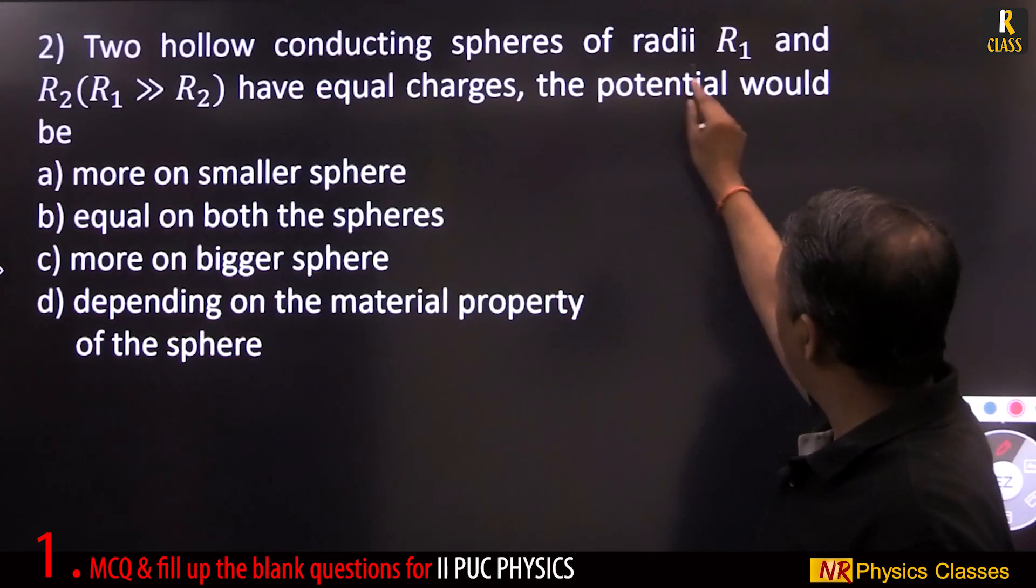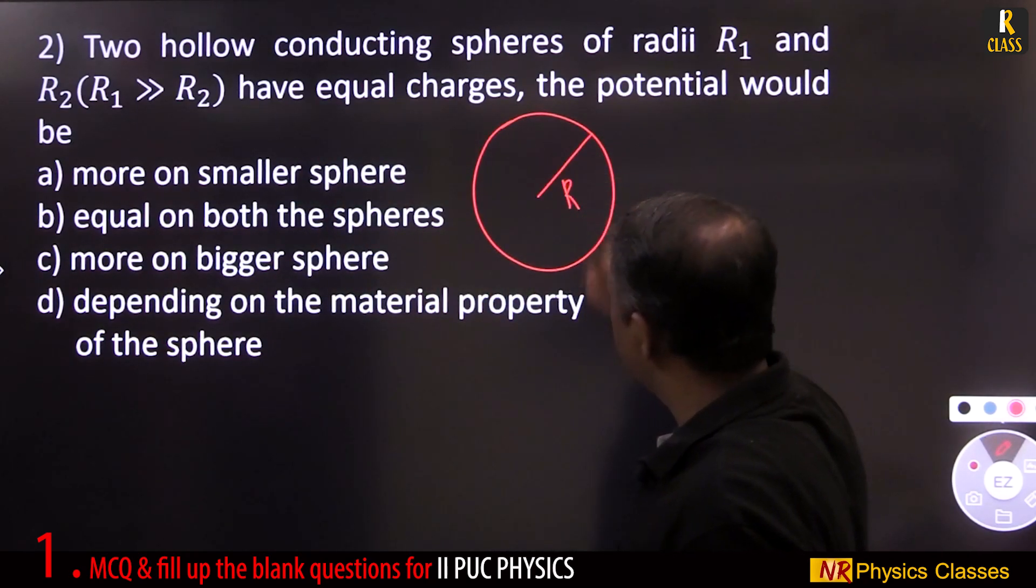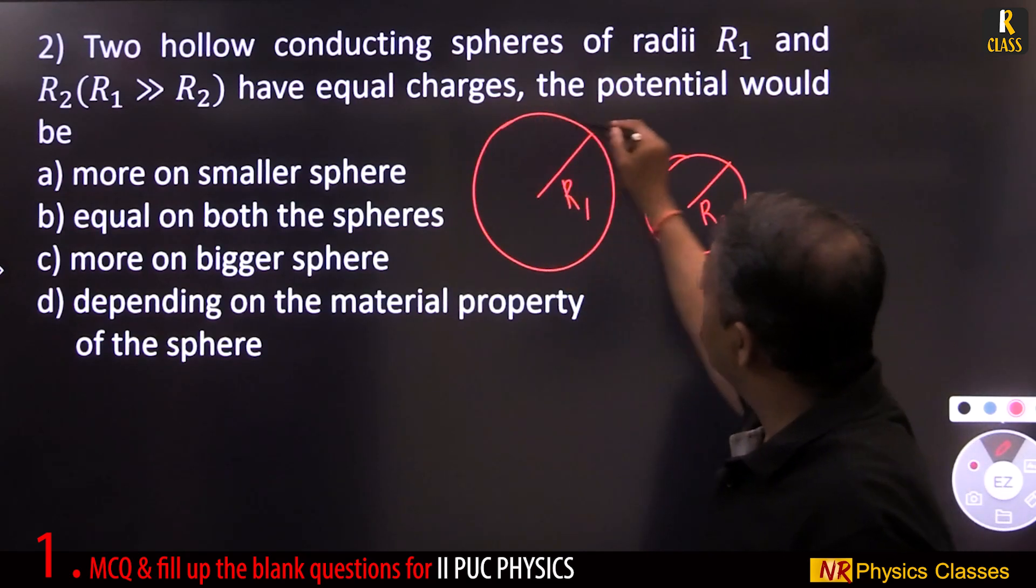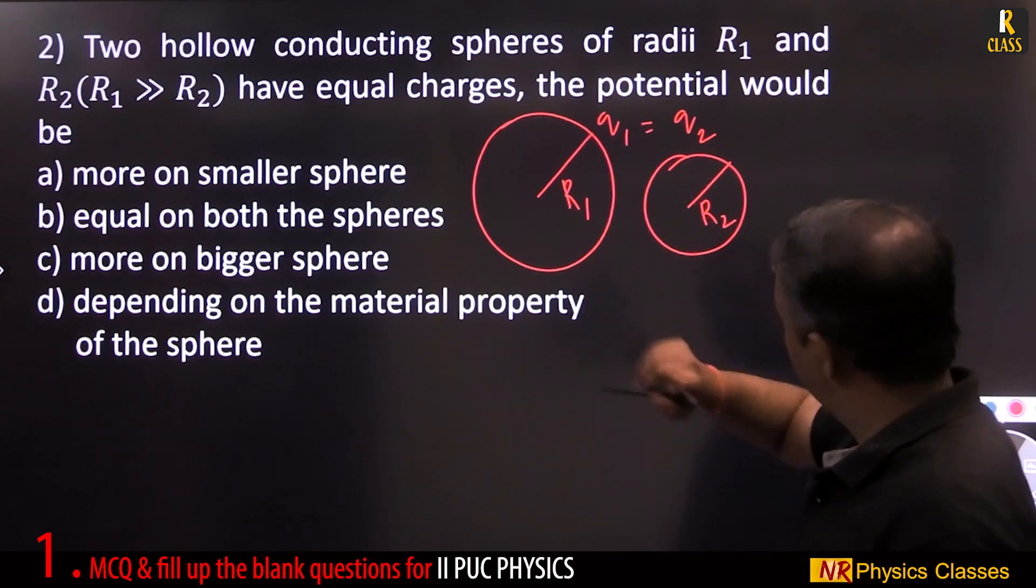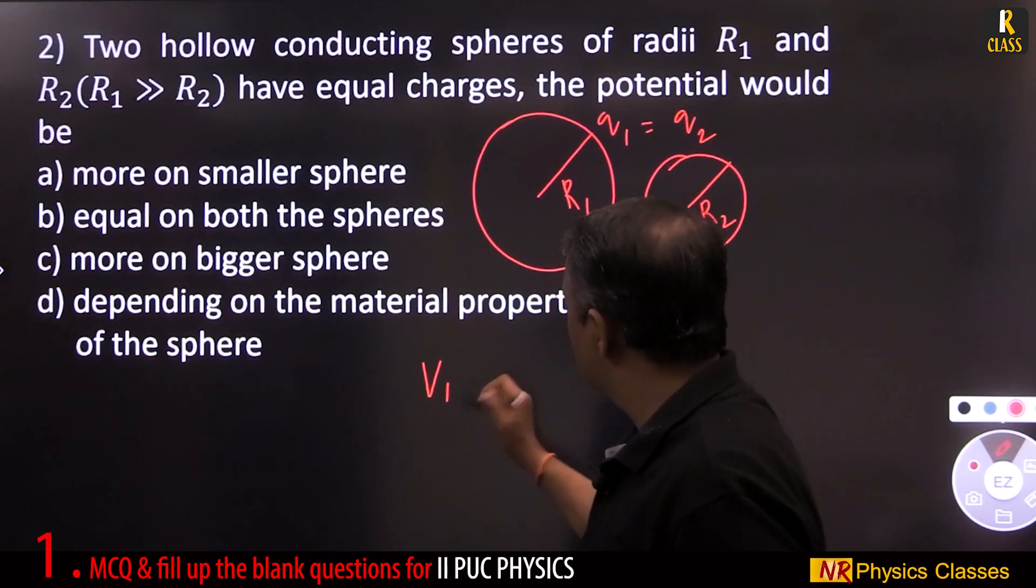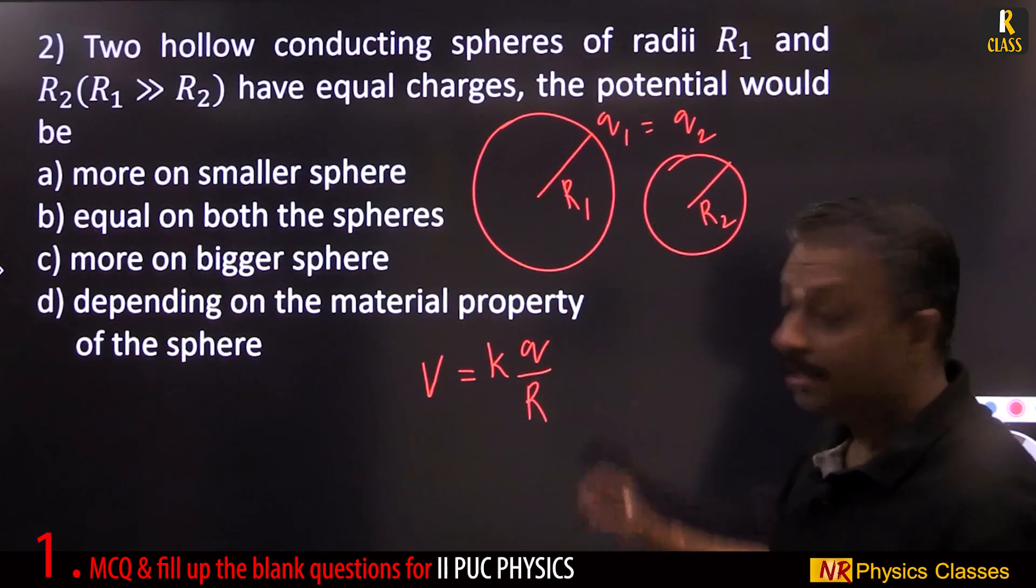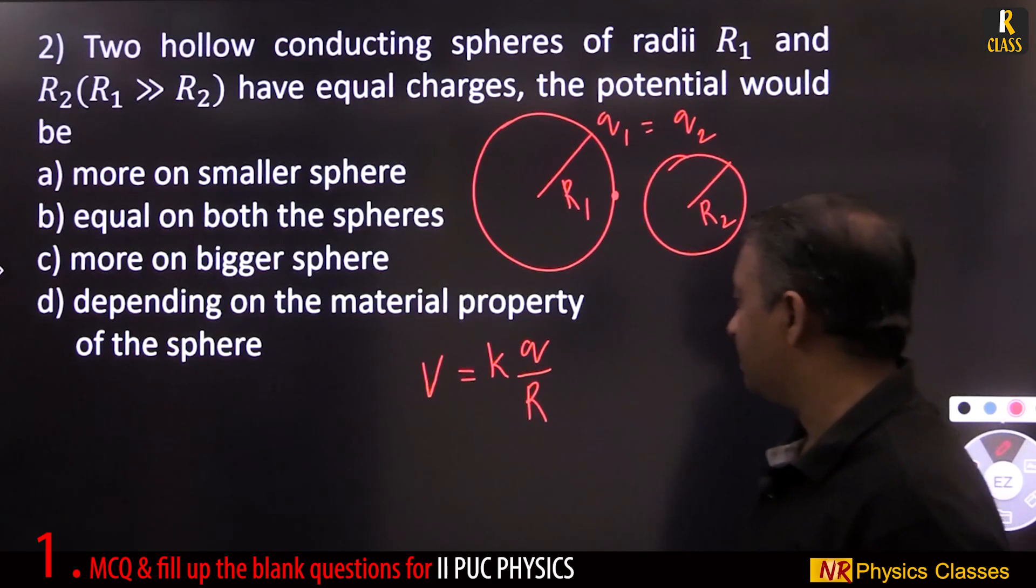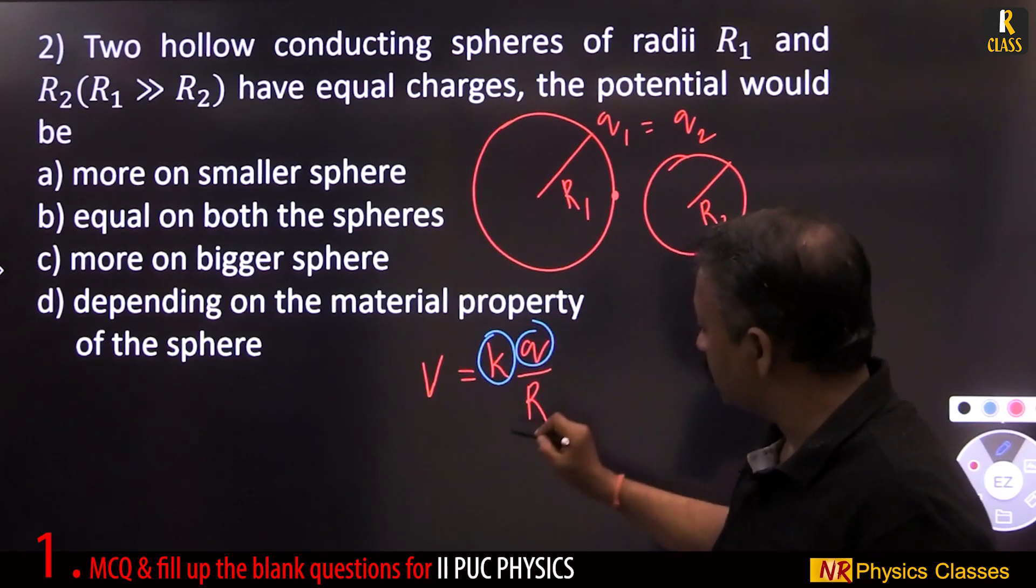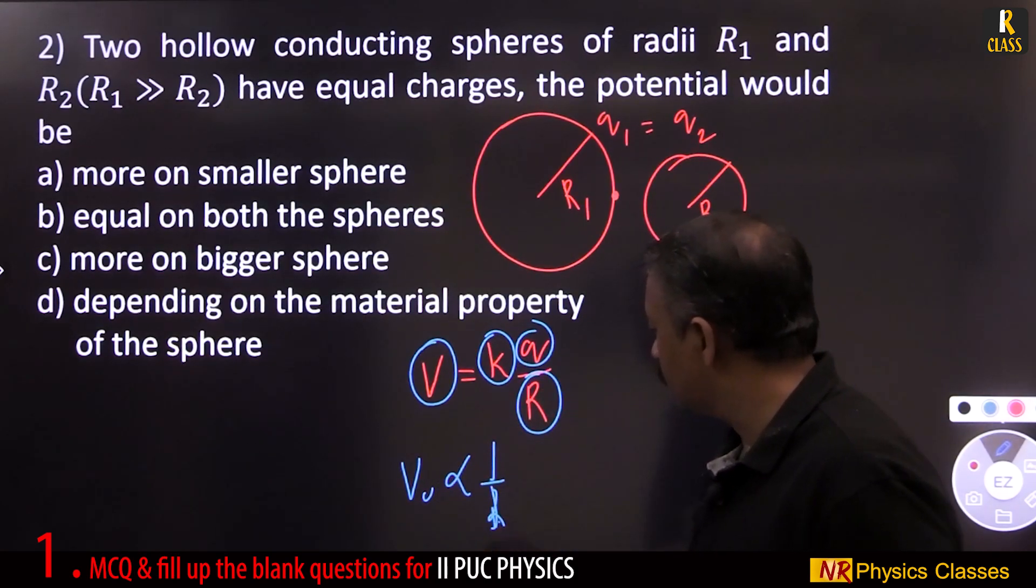Two hollow conducting spheres of radii r1 greater than r2. This is a conducting sphere of radius r1 and this is a smaller sphere of radius r2. They have equal charges q1 equal to q2. The potential would be: potential v equal to constant q by r, where r is radius. Potential at a point on the surface. Now, charge is constant, equal charges. So v is inversely proportional to r.